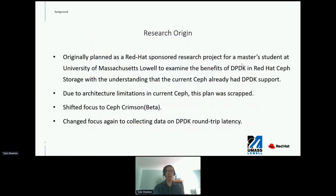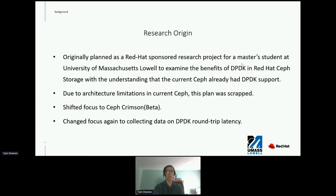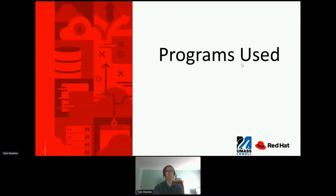This project started as a Red Hat-sponsored research project at UMass Lowell to examine the benefits of DPDK in Red Hat storage, with the understanding that the current Ceph already had DPDK support. However, due to architecture restraints, Ceph cannot benefit from DPDK. This caused a shift in focus to Ceph Crimson, because development notes claimed DPDK compatibility. A final change in focus was made due to an approaching deadline and issues getting Ceph Crimson running with DPDK, resulting in collecting data on DPDK roundtrip latency, which is what Ceph hoped to gain from DPDK.